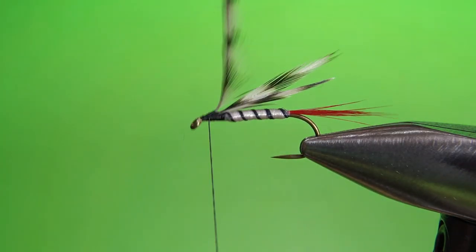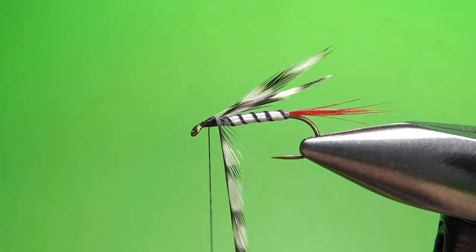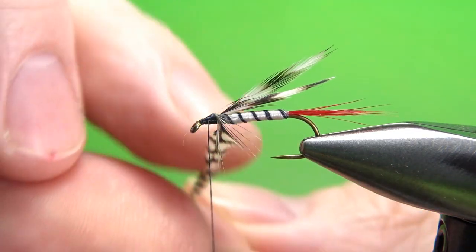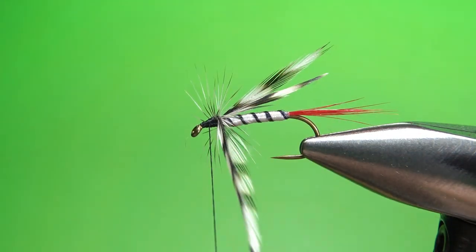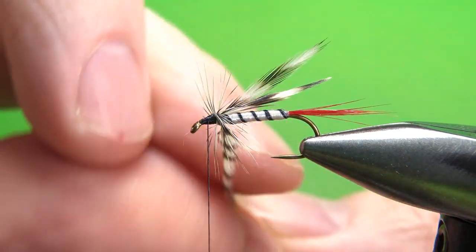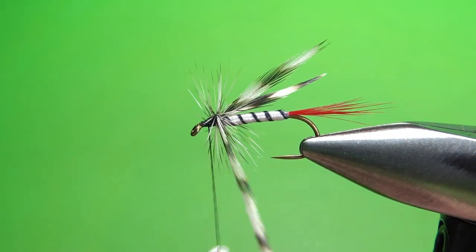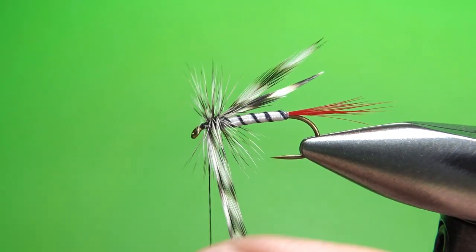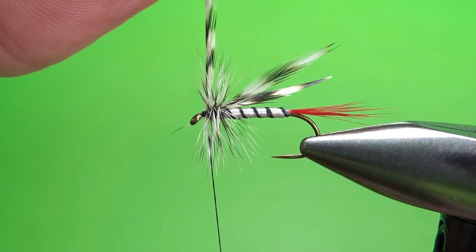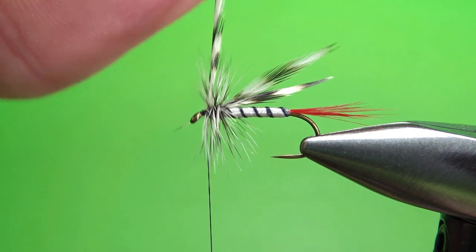I've got about four inches of this feather, so I'm not going to use my hackle pliers. I'm just going to try to get four or five good wraps. We'll see how it works. Doesn't always work for me, but sometimes it does. I think that's enough hackle right there.